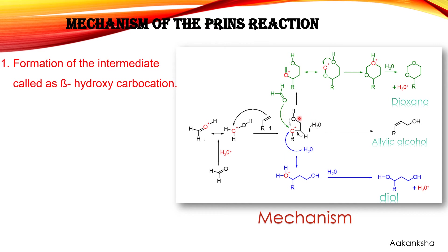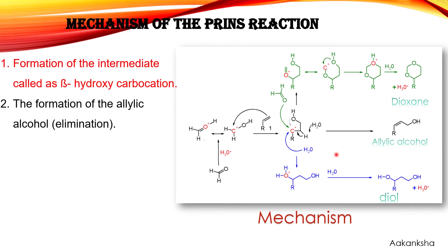In the Prince reaction, this carbocation is responsible for forming the different products: the allylic alcohol, the dioxane, or the diol. For the allylic alcohol: the aldehyde gets protonated by the protic acid to form the oxonium ion, which attacks the alkene to form the intermediate. Then water abstracts the proton, the double bond is restored, and we get the allylic alcohol, with H₃O⁺ as a side product.